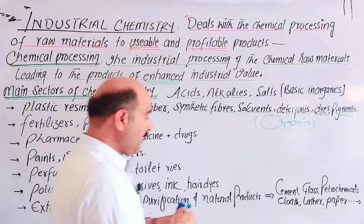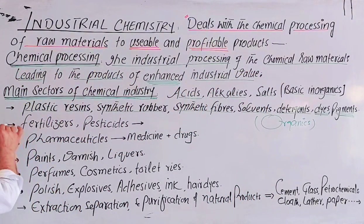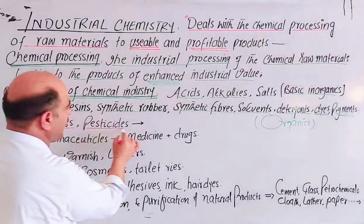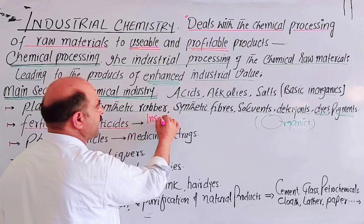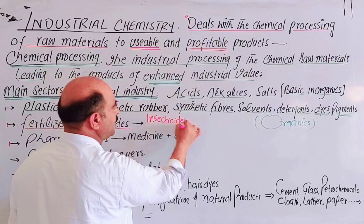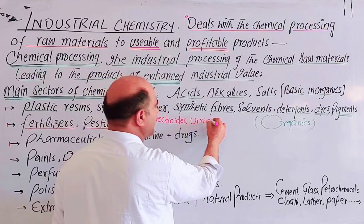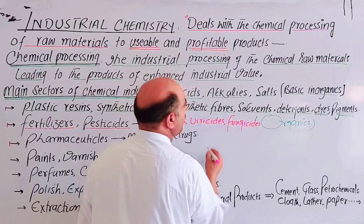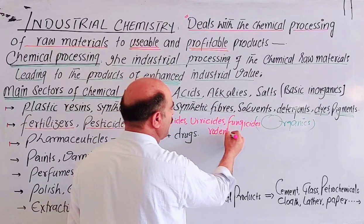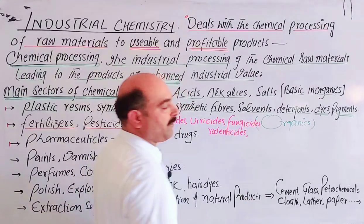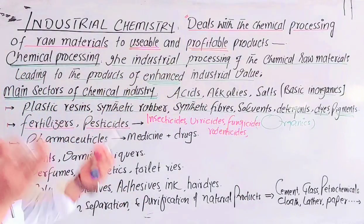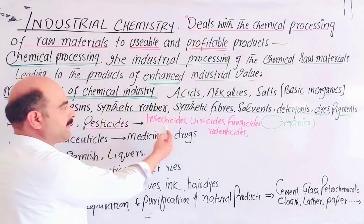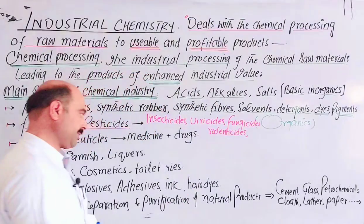Industrial processing industries also cover fertilizers and pesticides. Pesticides include: insecticides — to kill insects; viricides — to kill viruses; fungicides — to kill fungi; and rodenticides — to kill rodents such as rabbits and rats, and so on.